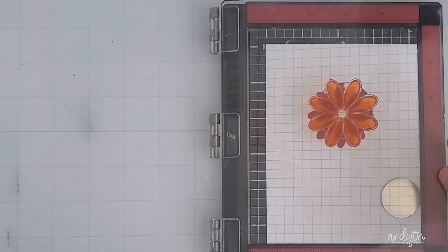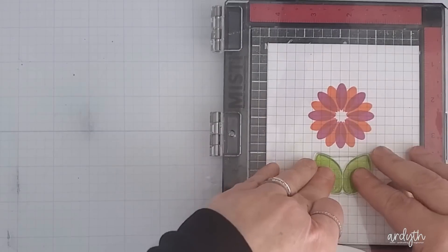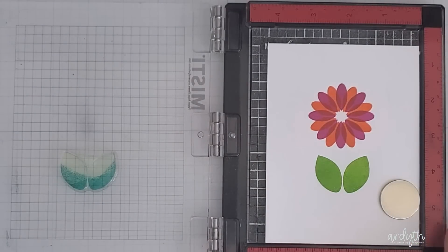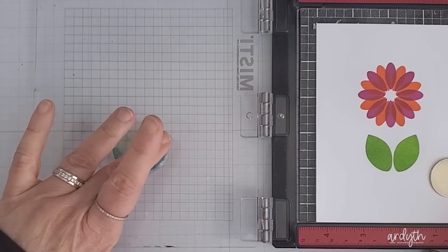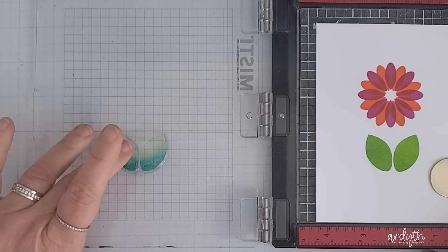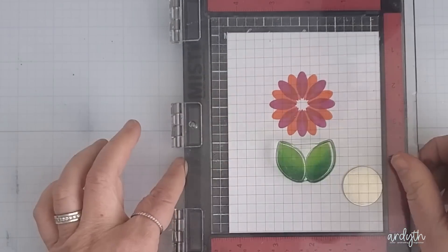And for the leaves I started by stamping them with lime ricky and then I grabbed my aquatini. This time instead of inking the stamp all over I just inked up the bottom part of the leaves. Then I used my finger to kind of lightly smudge the edges of the ink. Now when I stamp it down I get a blended look and that gives the leaves a look of dimension.